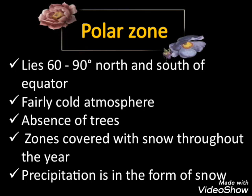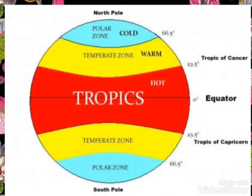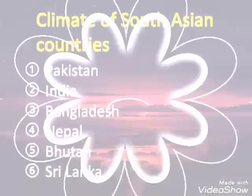The polar zone lies between 60 degrees to 90 degrees north and south of the equator. It is characterized by a fairly cold atmosphere and absence of trees. Polar climate zones are covered with snow throughout the year, and precipitation in this region is mostly in the form of snow.